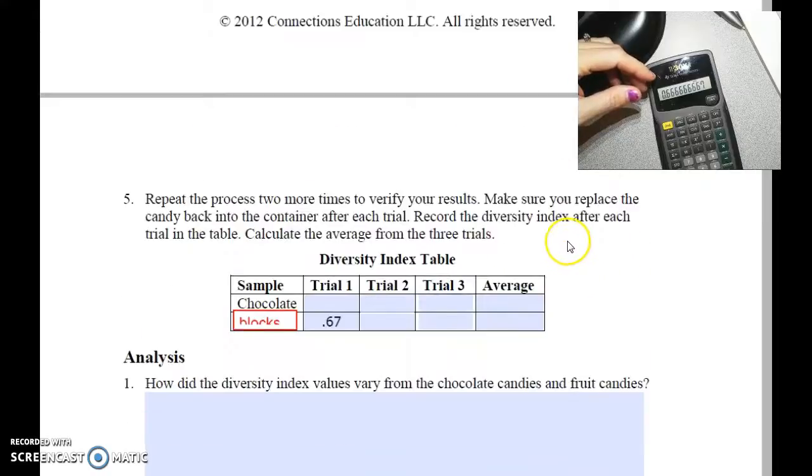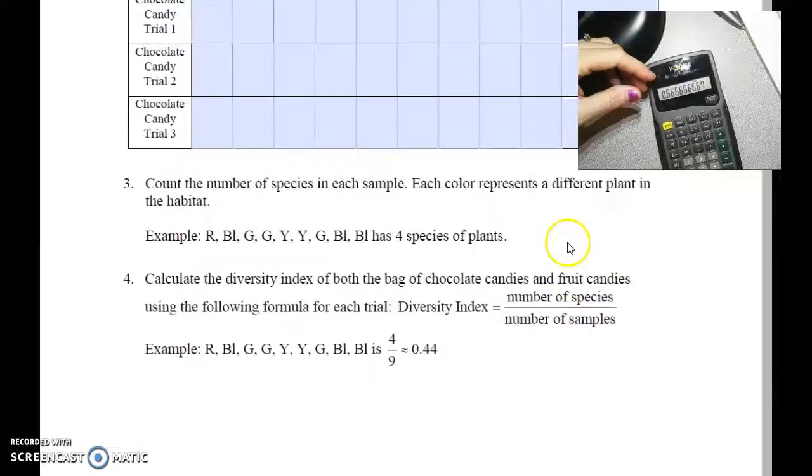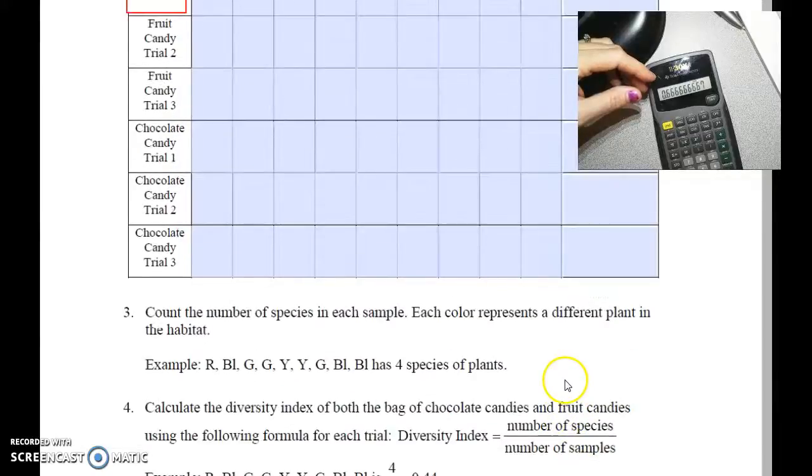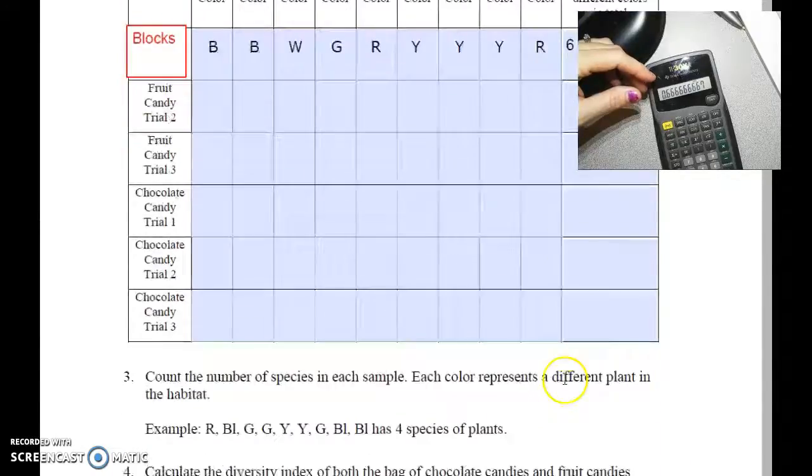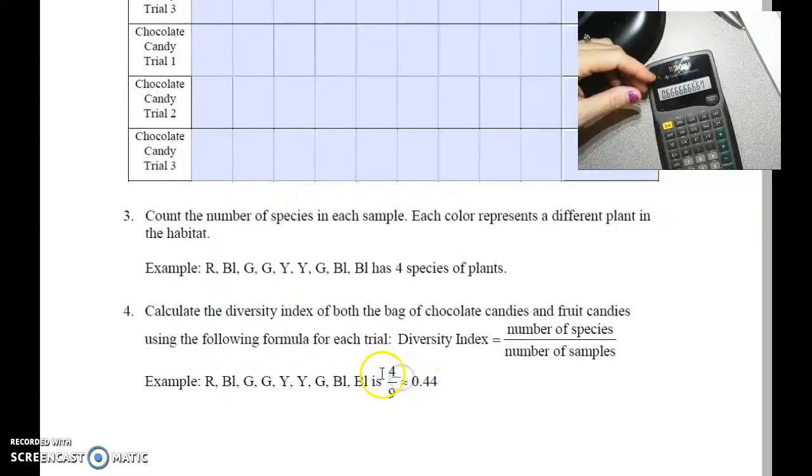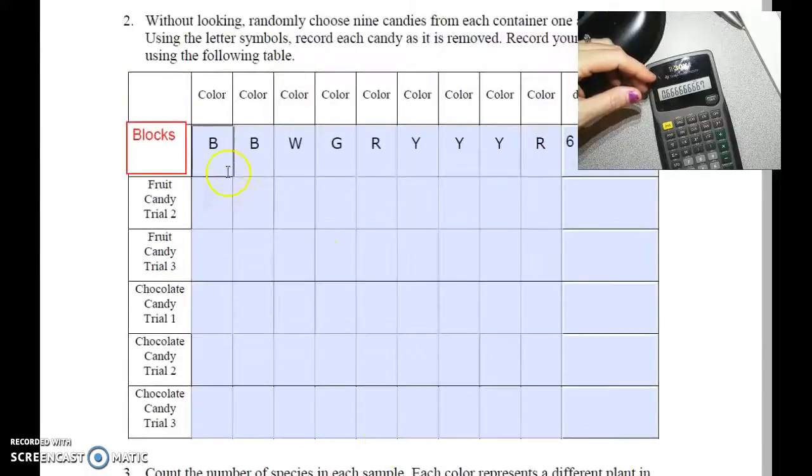If you have a diversity index of one, that means that you would have a very, very diverse population. So total number of different colors divided by the total picks that you did. We did nine picks: one, two, three, four, five, six, seven, eight, nine.